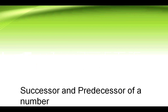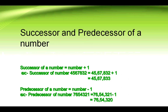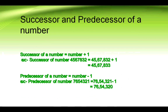Successor and predecessor of a number. The successor of a number equals the number plus one. To find the successor of any number, we need to add one. Example: the successor of 45,67,832 equals 45,67,832 plus one, which equals 45,67,833.